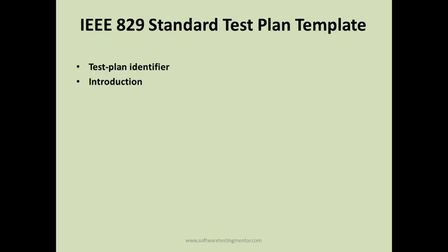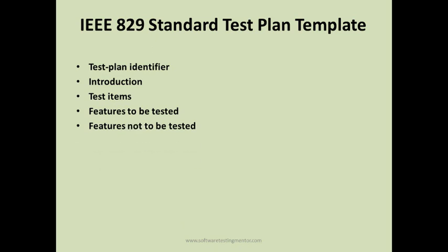The IEEE 829 standard test plan template includes: a test plan identifier, an introduction to the testing project in the development lifecycle, and the test items — for example, if you have 10 modules, which modules are in scope and need to be tested. Then you specify the features to be tested — what specific features within those items need to be tested.